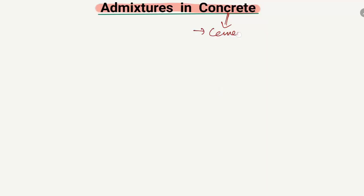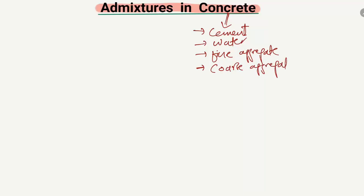Basically, concrete is a construction material that has different components. Concrete is composed of cement, water, fine aggregate, and coarse aggregate, and it also contains admixtures. So what is the purpose of admixtures in concrete? In today's lecture we will be focusing on admixtures.